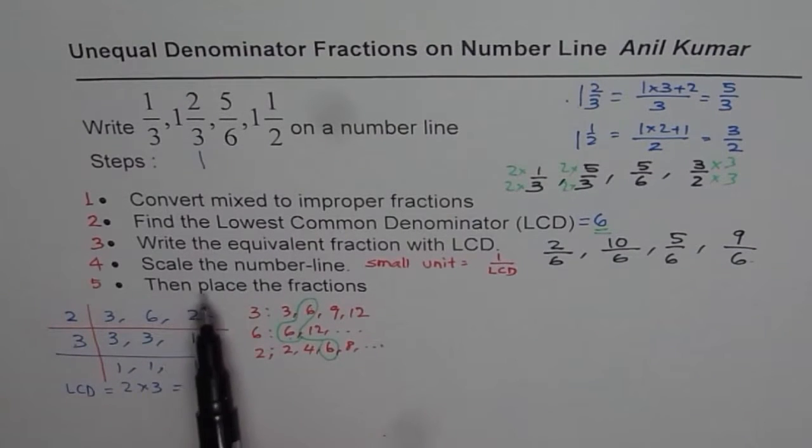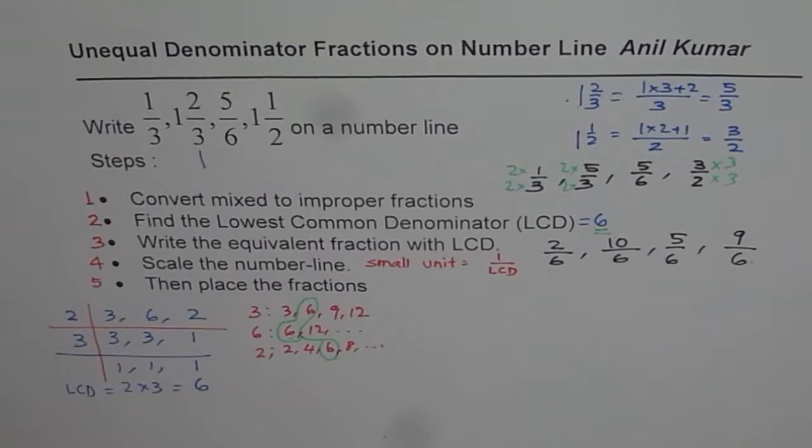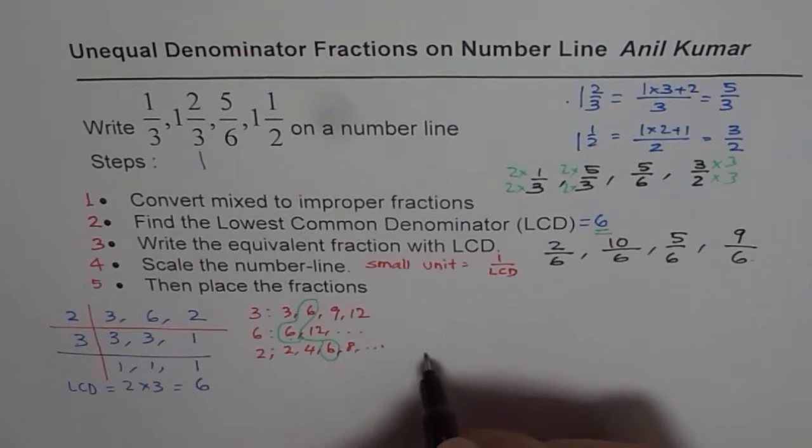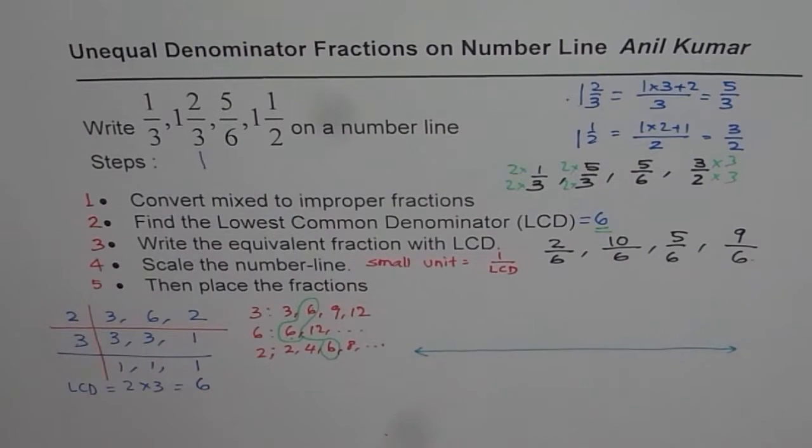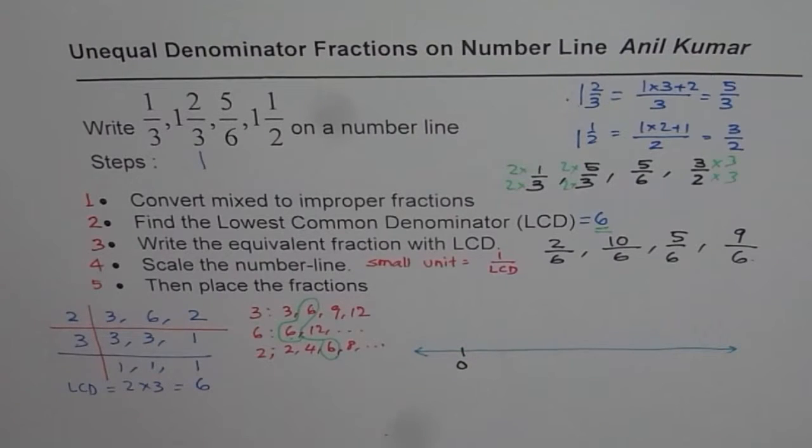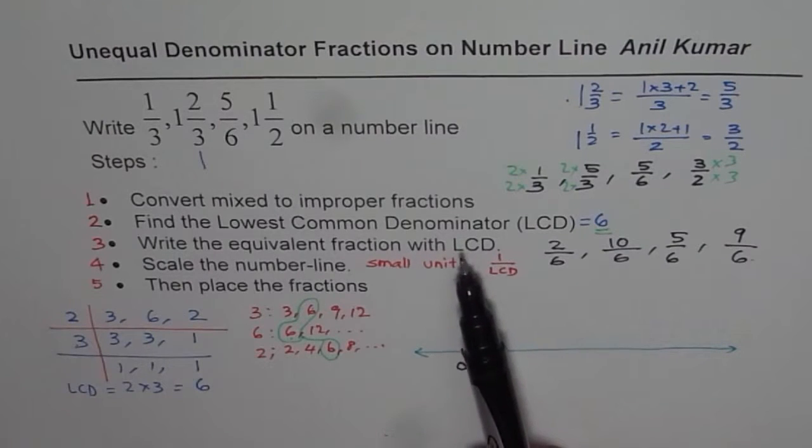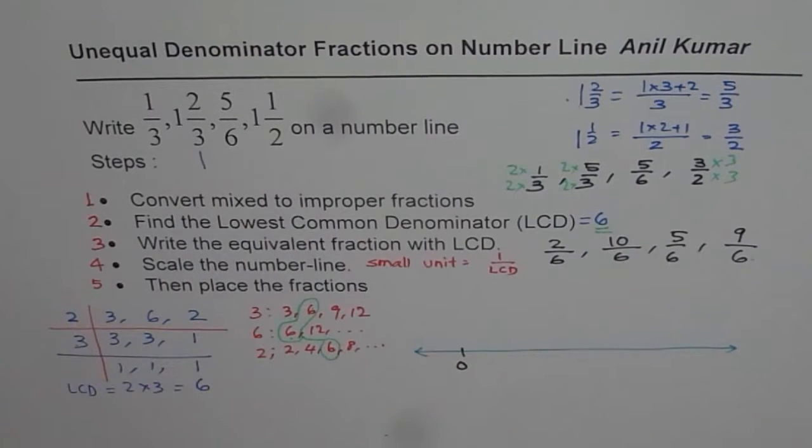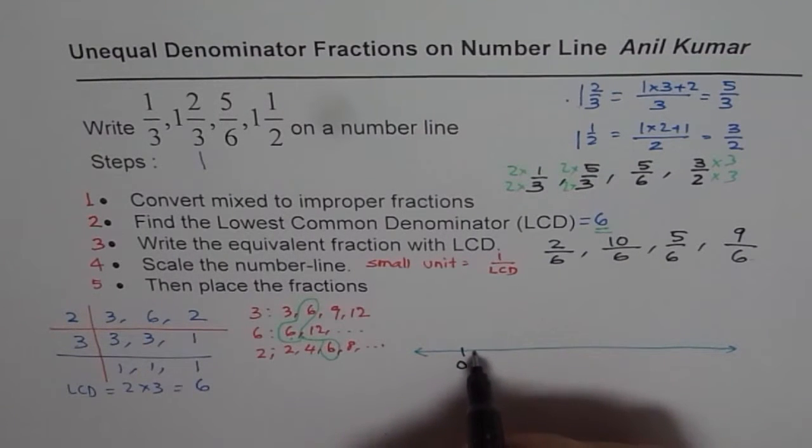Let's move on to step number 4 where we need to scale a number line. Now what does it mean? Draw a number line. Let's say this is a number line. Since all are positive numbers, sometimes you can have negative numbers also. Begin by 0. What is the lowest common denominator? 6. So minimum fraction you need is 1 over 6. So what we will do here is that we will make divisions of 1 over 6.